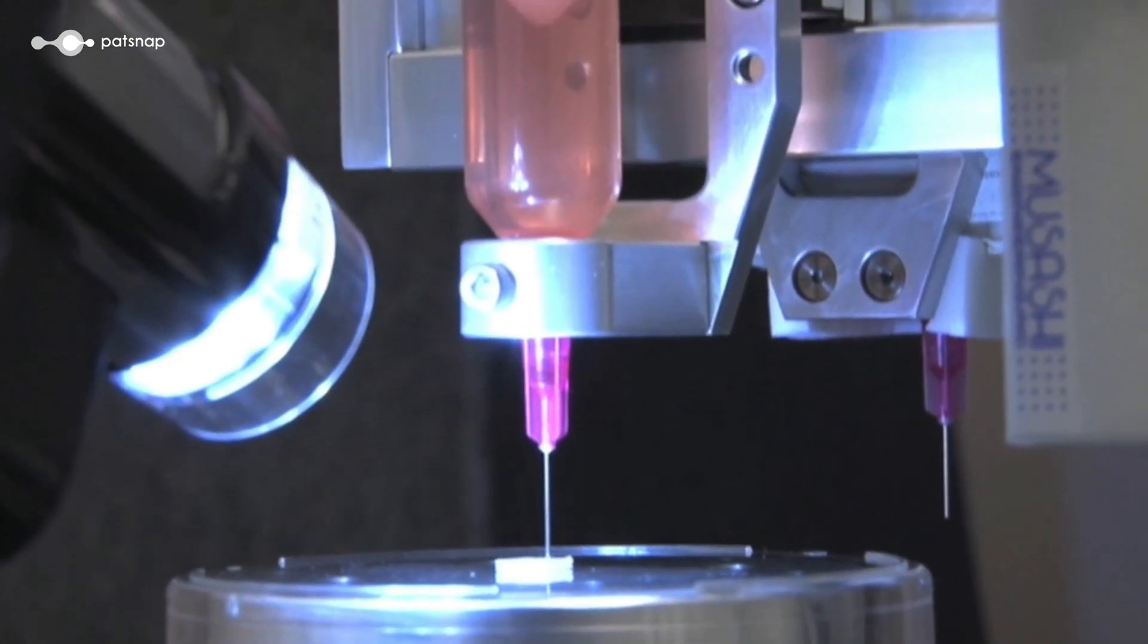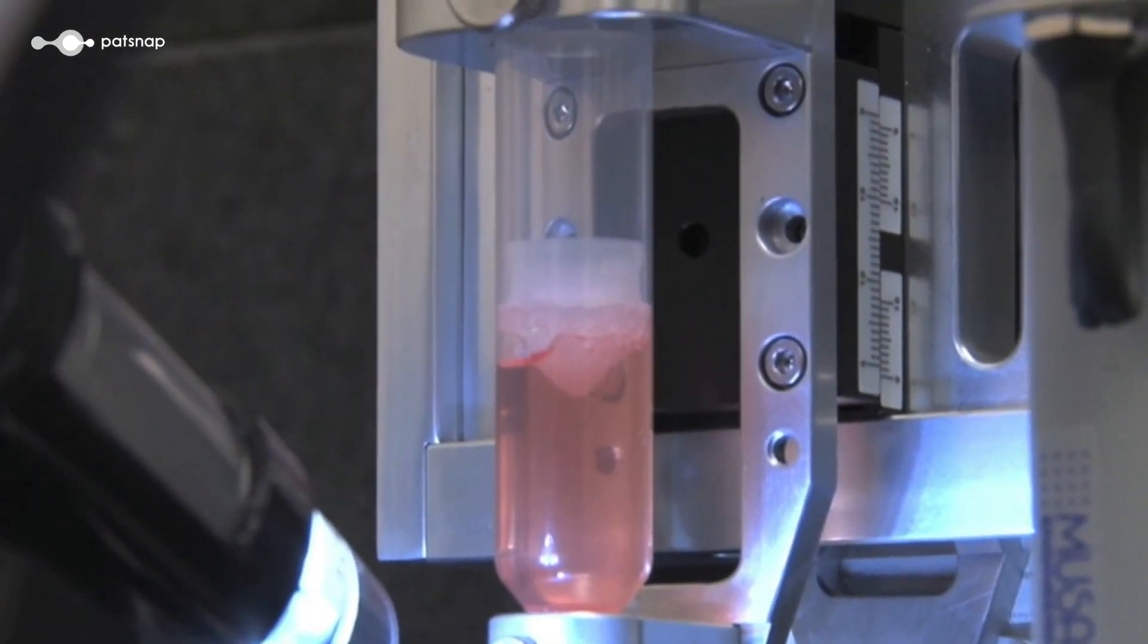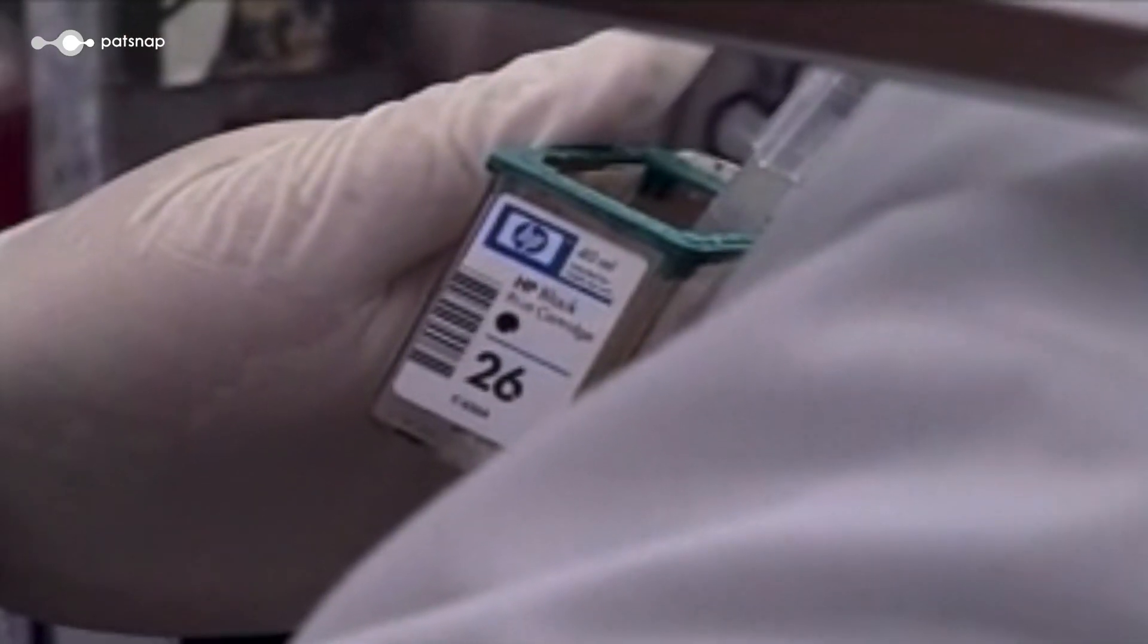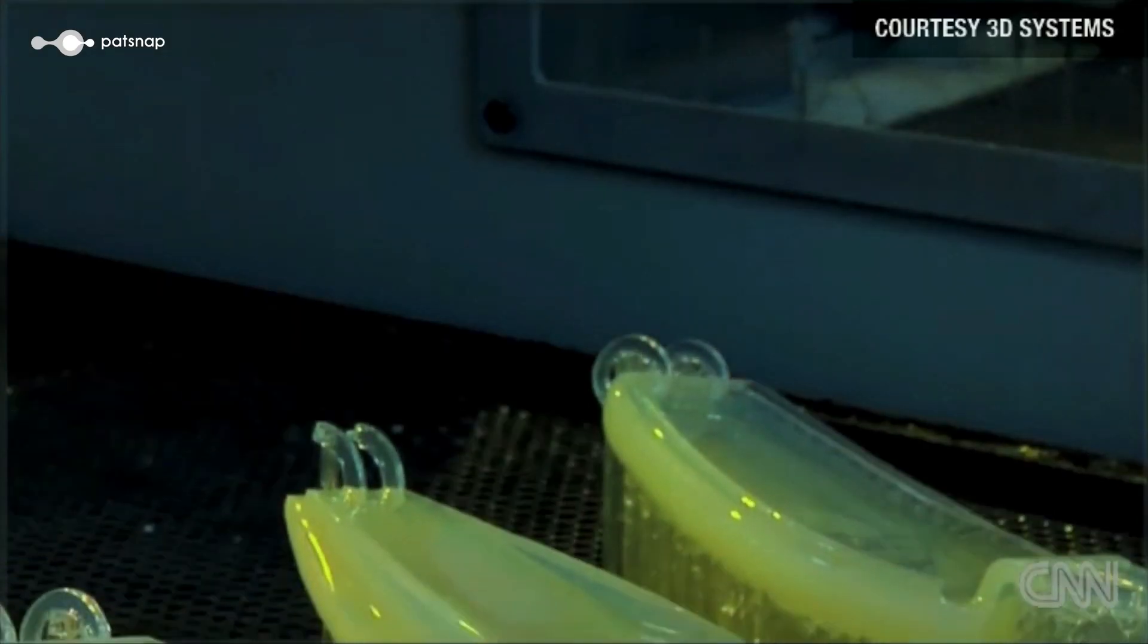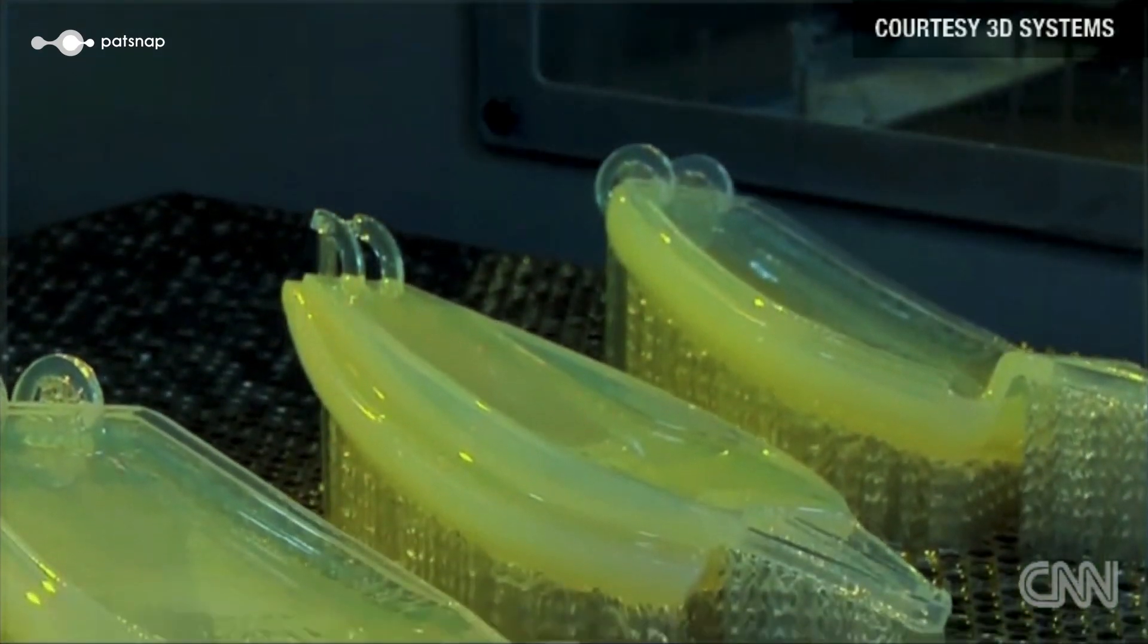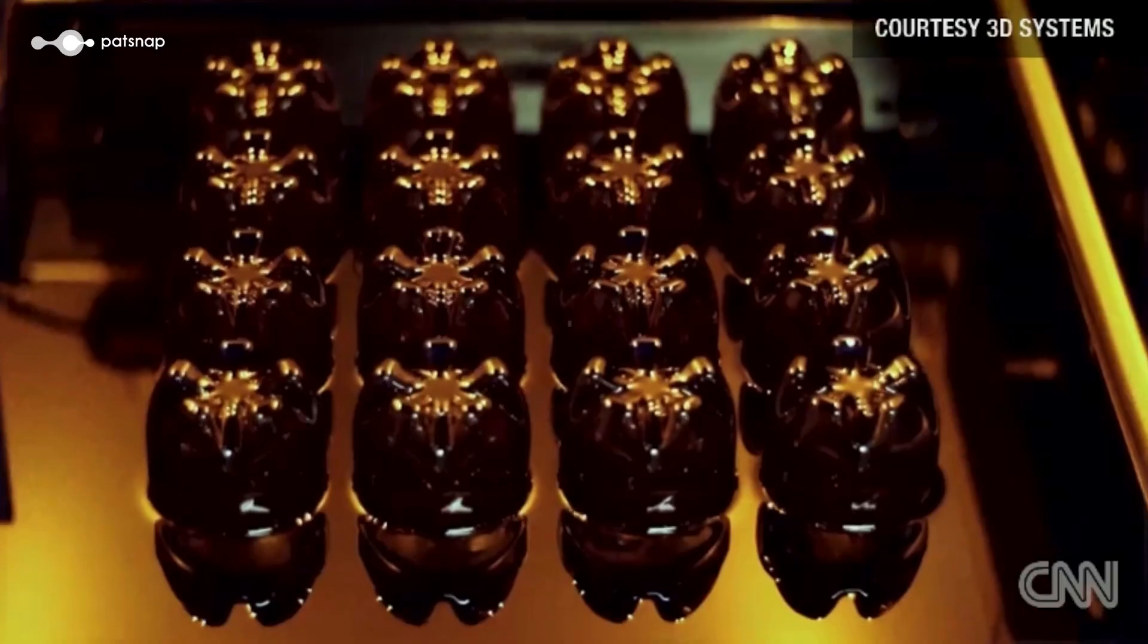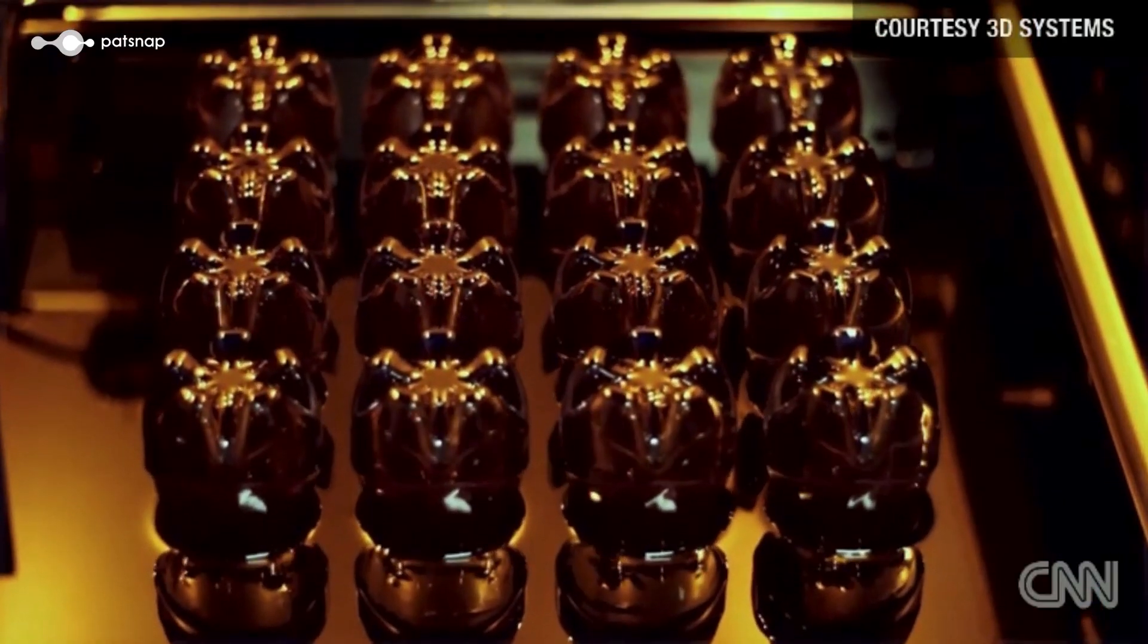These inks are then loaded into specialist printers. Some bear striking similarities with ones you might be familiar with, like inkjet printers and laser printers, while others, like this one, you might not have seen before. This is a stereolithography printer. Stereolithography, or SLA, is a printing technique that uses light to transform liquid bio-ink into solid 3D structures.